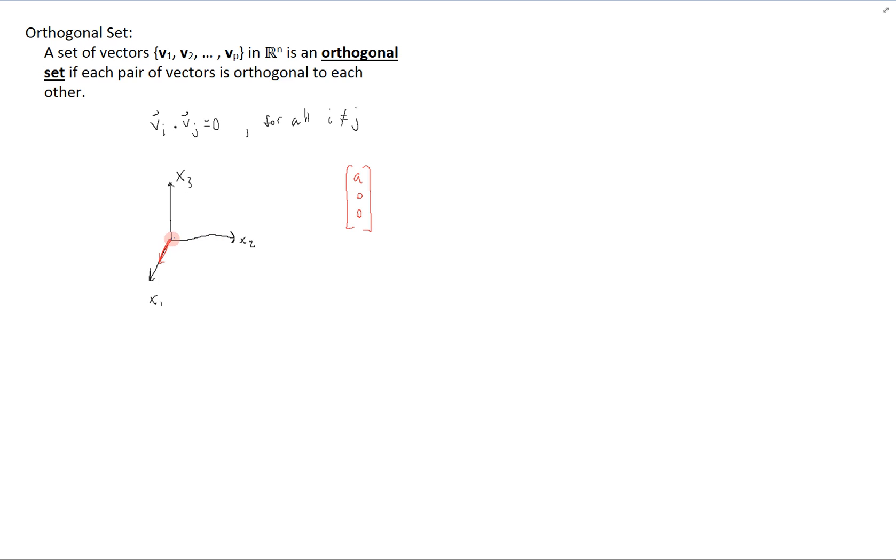We have some vector along the X2 axis, and it has some length B. And we have a vector along X3, and it has a length C. And so altogether, this defines an orthogonal set. Let's call these vectors V1, V2, and V3.